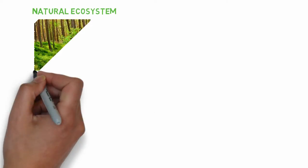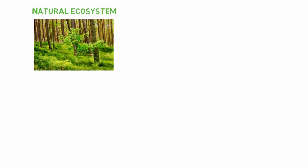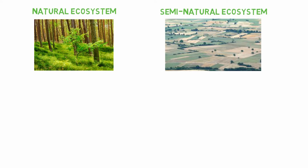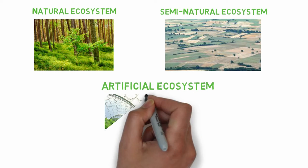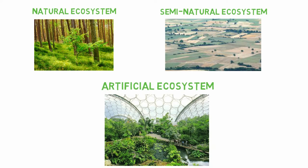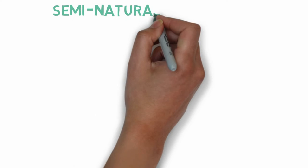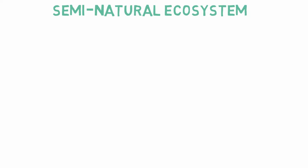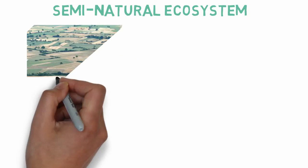There are three types of ecosystems. The first one is the natural ecosystem — it is an ecosystem not perceptibly altered by humans. The second one is the semi-natural ecosystem — it is an ecosystem that has been altered by human actions but which retains significant native elements. The third one is the artificial ecosystem, which is a man-made system of plants, animals, and people living in an area together with their surroundings.